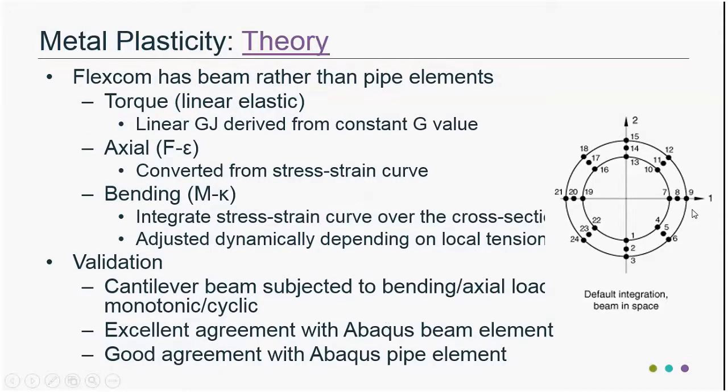In FlexCom we have a beam element — a single element with two endpoints. We don't have a pipe element where you'd have integration points around the circumference and through the wall thickness. What we've done is model plastic deformation as best we can with our own element. For torsion, we assume linear elastic behavior with a linear GJ term derived from a constant shear modulus. For axial behavior, we have a stress-strain curve comprising a linear region for Young's modulus and the plastic stress-plastic strain curve, which we convert from stress-strain into axial force versus axial strain.